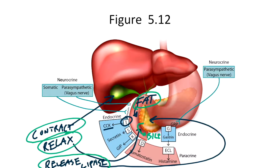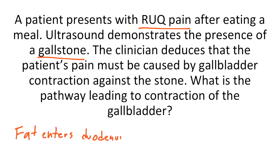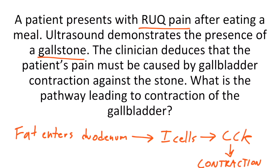A patient presents with right upper quadrant pain after eating a meal. Ultrasound demonstrates the presence of a gallstone. The clinician deduces that the patient's pain is caused by gallbladder contraction against the stone. When the patient eats a meal, fat enters the duodenum, which stimulates the I cells to release CCK. CCK then acts on the gallbladder to cause it to contract, and this contraction would cause pain if the gallstone enters the cystic duct, which was discussed in section four of this chapter.